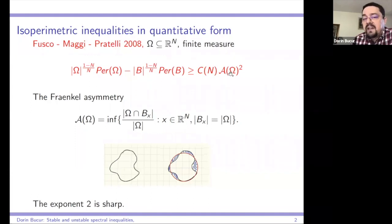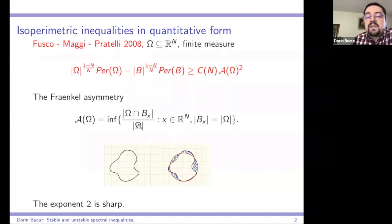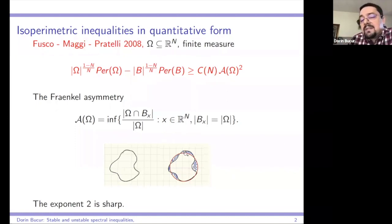The Fraenkel asymmetry is one way to measure the asymmetry of omega with respect to the ball, defined as the infimum of the measure of the symmetric difference between omega and a ball divided by the measure of omega, among all balls of the same measure as omega. In the drawing, you have omega, and you put the ball in the best possible way to cover omega, and the Fraenkel asymmetry measures the symmetric difference between omega and the ball.